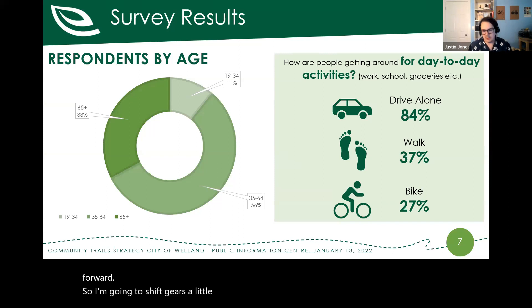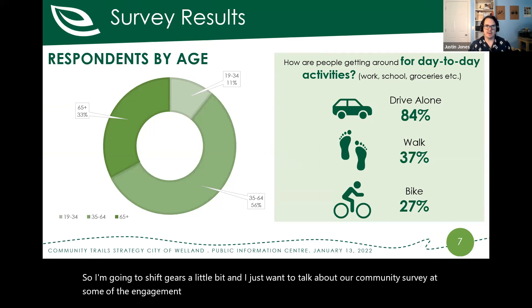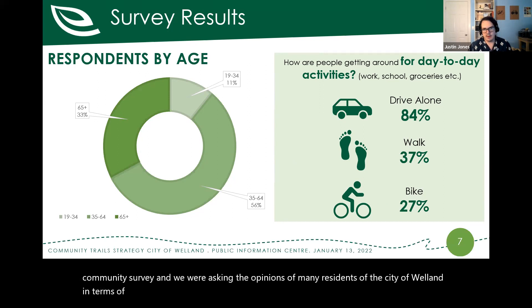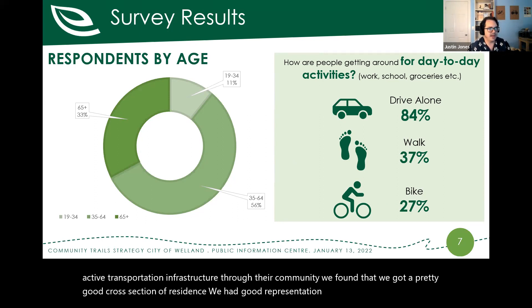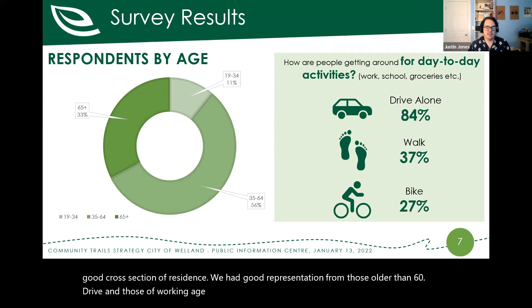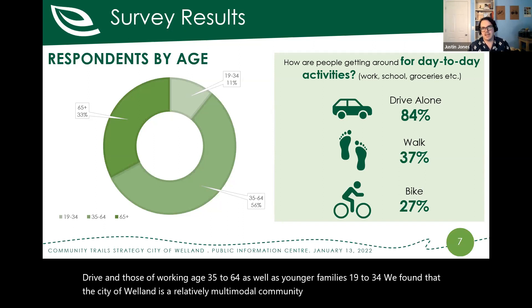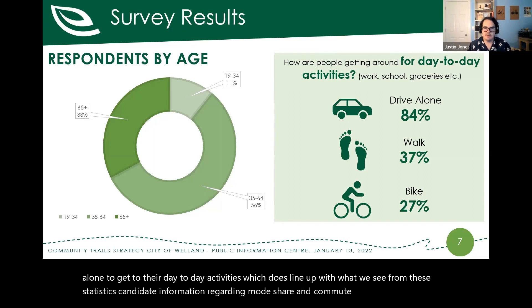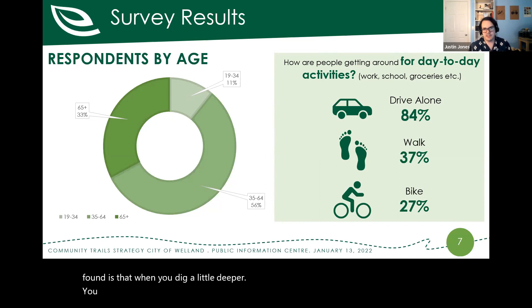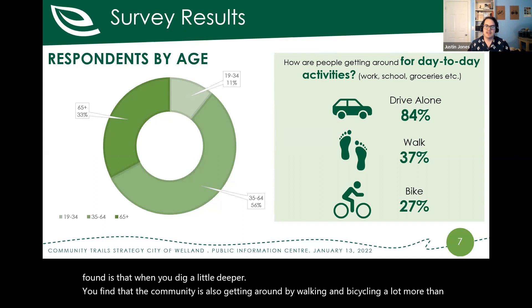We launched an online community survey asking residents of the City of Welland how they get around and how they see trails and active transportation infrastructure in their community. We got a good cross section — good representation from those older than 65, working age 35 to 64, and younger families 19 to 34. We found that Welland is a relatively multimodal community. While 84% say they drive alone to get to day-to-day activities, when you dig deeper you find the community is walking and cycling a lot more.